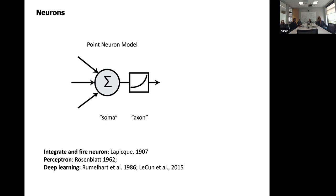In deep learning from 1986 through 2021, this is still by far the most common idea. But as we know, this is not really what a real neuron is. Real neurons are much more complex than this.